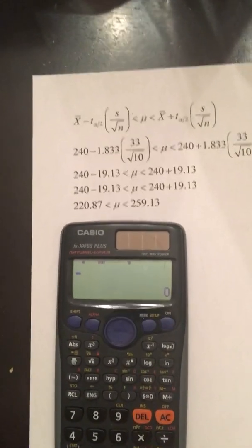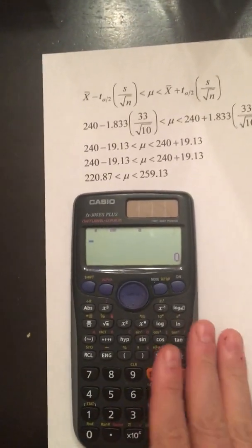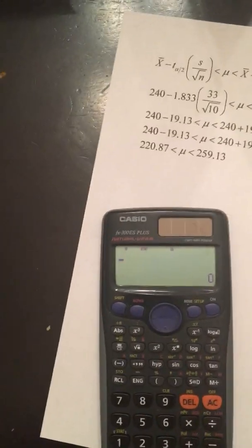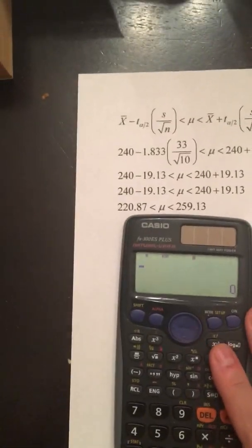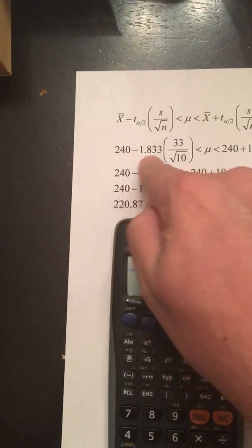We're going to learn how to compute a confidence interval using a Casio. What I typically do is type in all of these values directly into the calculator.